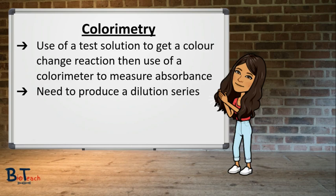Colourimetry is a good method to use when you want to determine the concentration of a specific substance in a solution. A reagent such as Benedict's solution may be added to your test or unknown solution where it reacts with the substance of interest to produce a colour. The samples are placed in a colourimeter which measures the solution's absorbance at a specific wavelength. A dilution series can be used to produce a calibration curve which can then be used to quantify that substance in samples of unknown concentration.